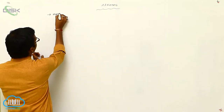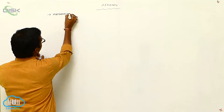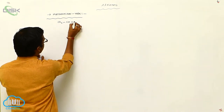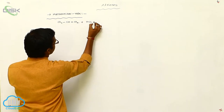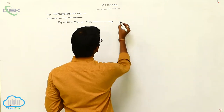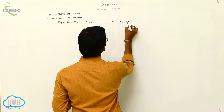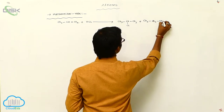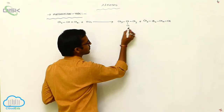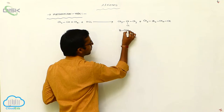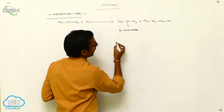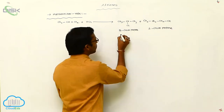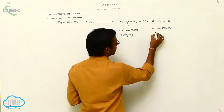Markovnikov rule: when an unsymmetrical alkene is reacted with HCl, it gives two types of products — CH3CHClCH3 and CH3CH2CH2Cl. The first one is 2-chloropropane and the second is 1-chloropropane. Of these two, 2-chloropropane is the major product and 1-chloropropane is the minor product.